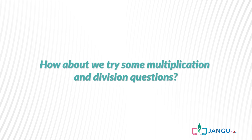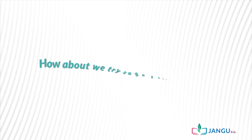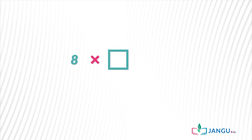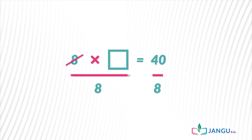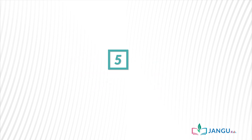How about we try some multiplication and division questions. 8 times an unknown number equals 40. In this case we divide each term by 8: (8 × unknown) ÷ 8 = 40 ÷ 8. 8 cancels out 8, and 40 divided by 8 is 5. Therefore the unknown value in the blank square box is 5.